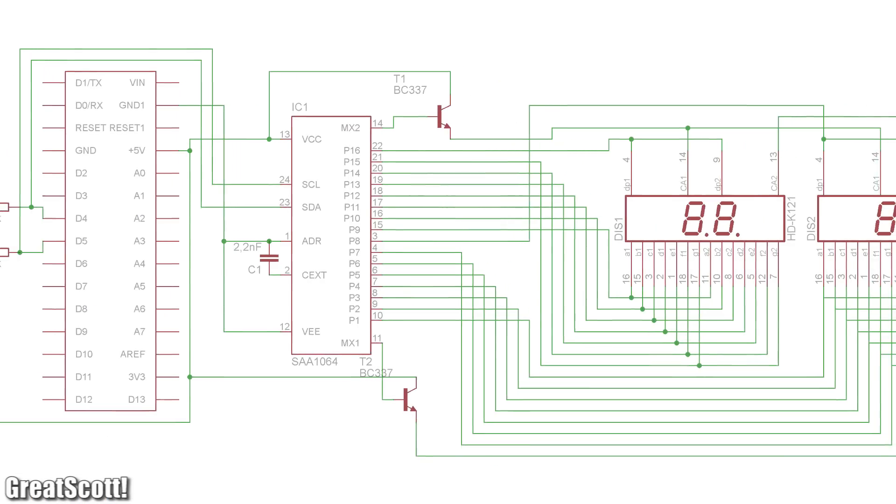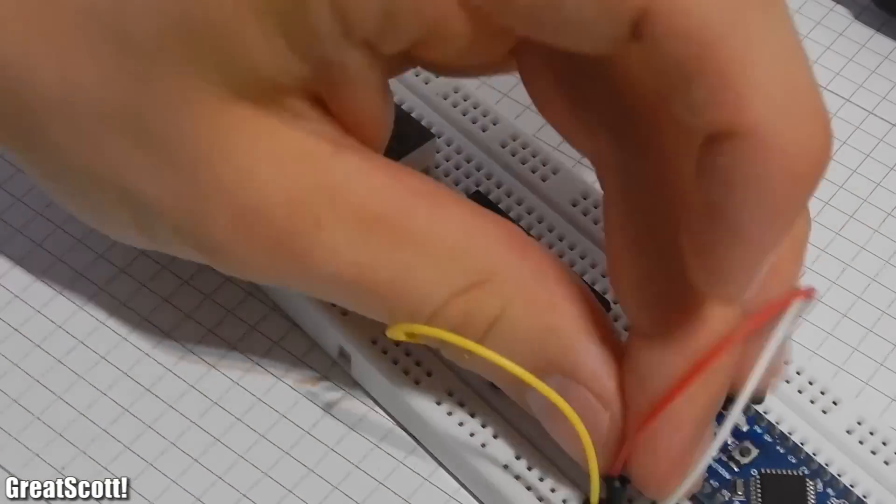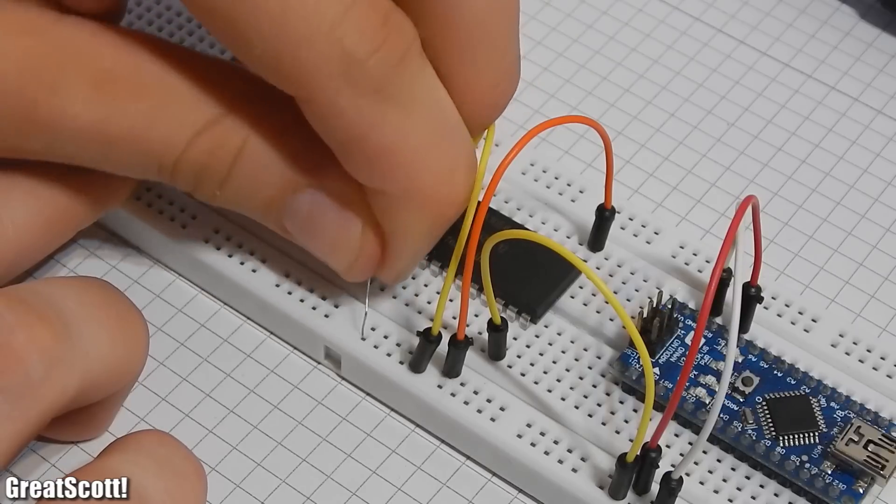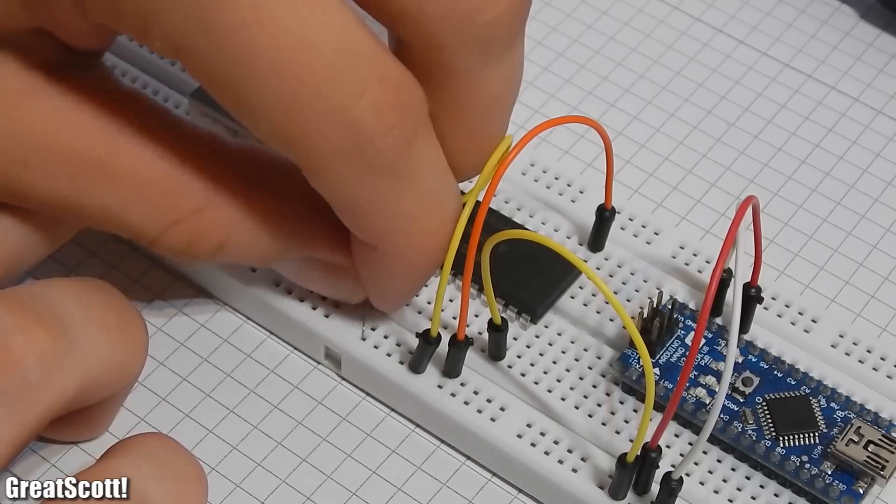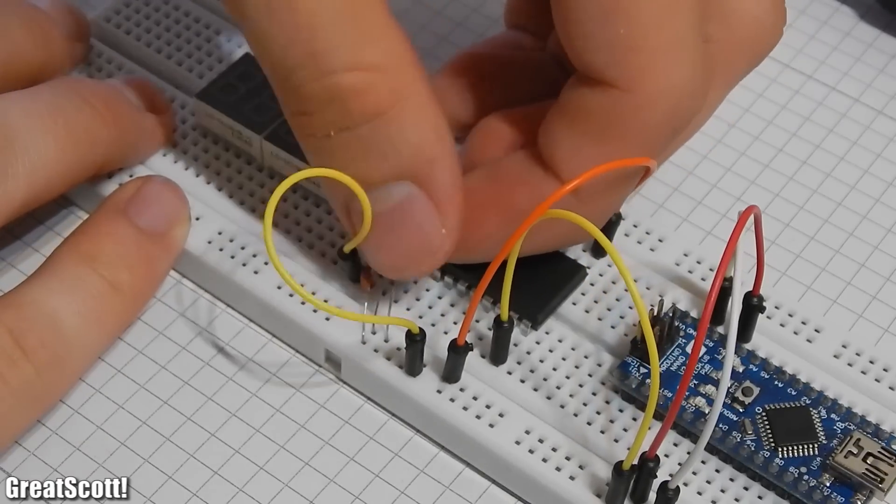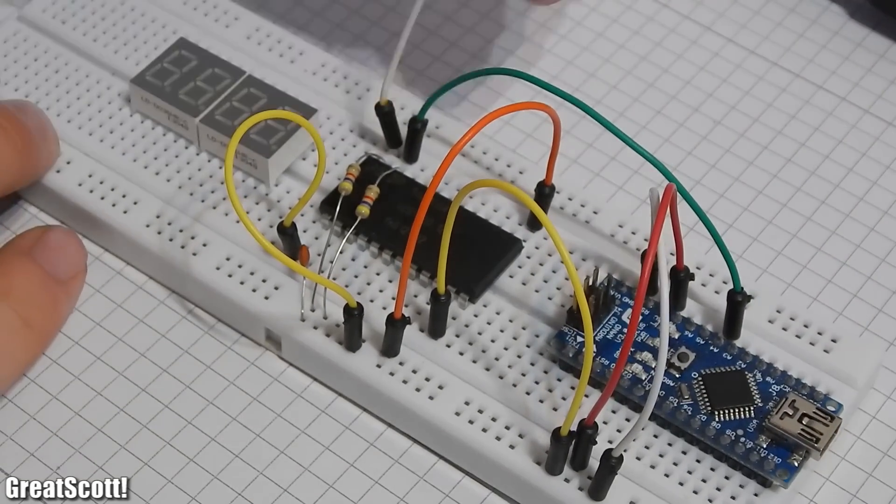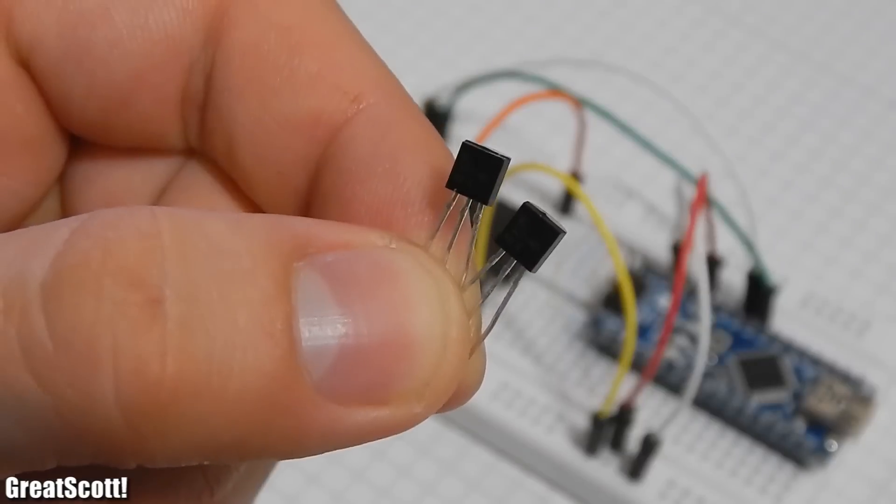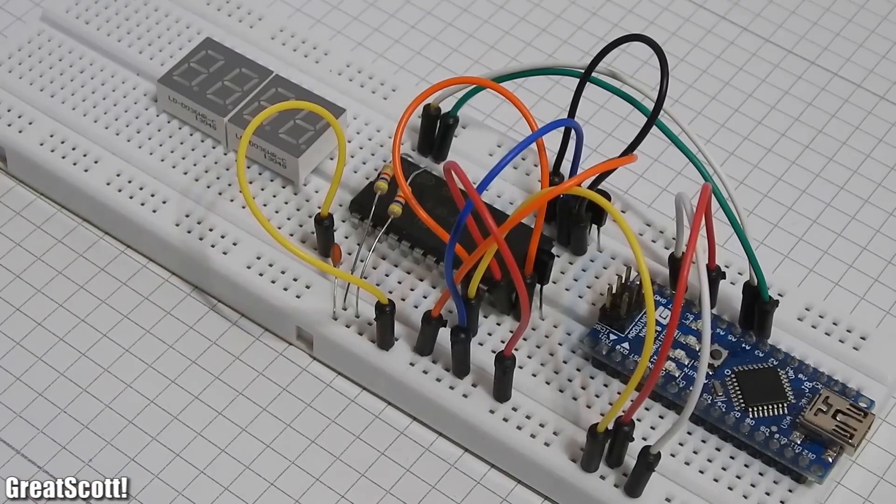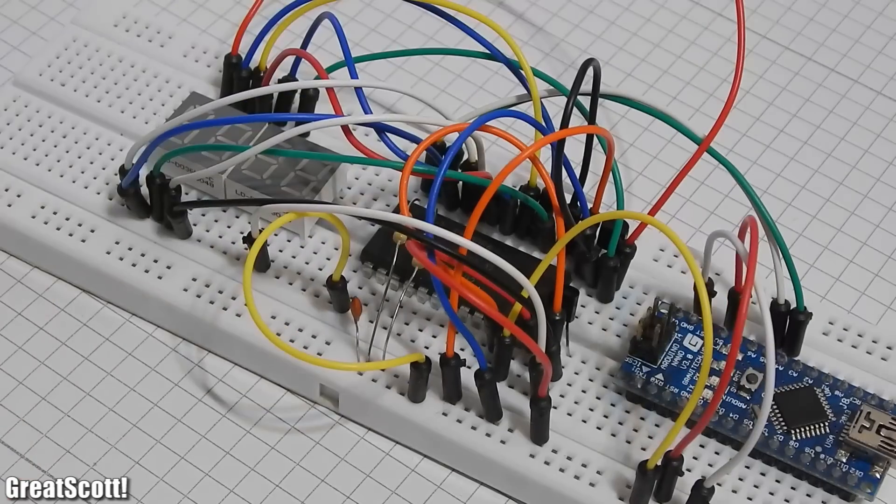But let's just build the circuit for now. Here is my schematic. We connect pin 1 directly to ground to set the I2C address to 0x70. I use a 2.2 nanofarad capacitor on pin 2 to set the speed for the multiplexing, and I connect a 4.7 kiloohm resistor between pin 23 and 5 volts and pin 24 and 5 volts as pull-up resistors. Pin 23 then connects to A4 on the Arduino and pin 24 to A5. And we need two basic NPN transistors to multiplex here. I'm using the BC337, which works just fine.